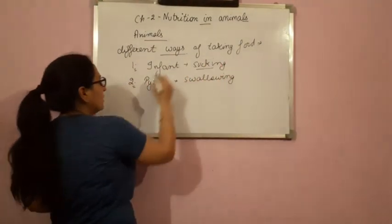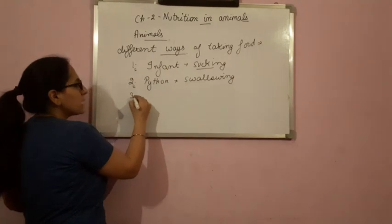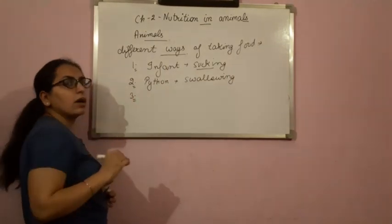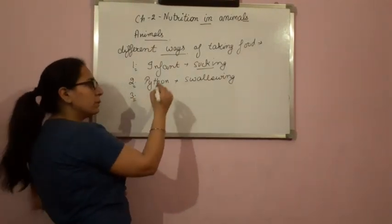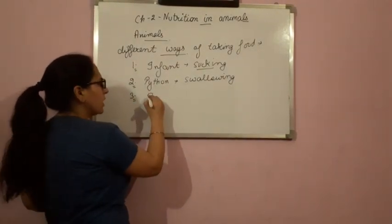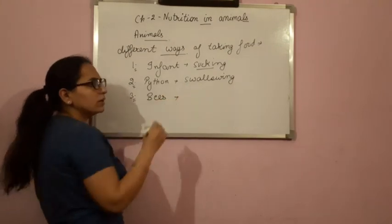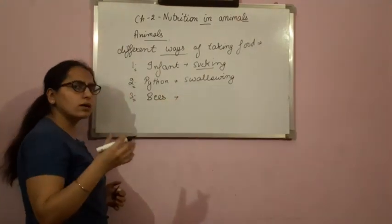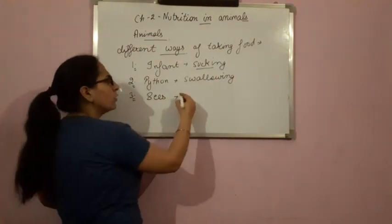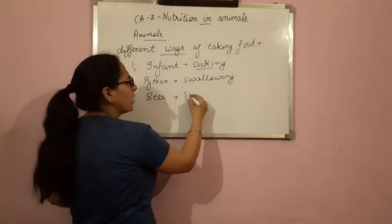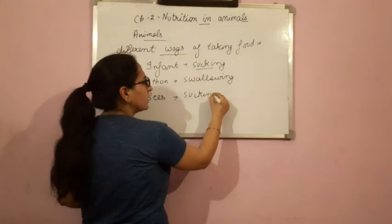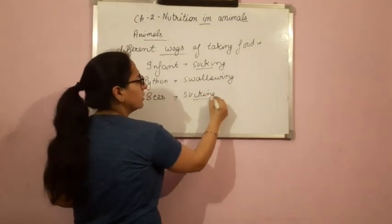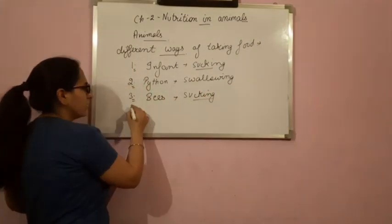Next example: hummingbird or bees. You are aware about bees — they used to suck the nectar of flowers. So again they are using a sucking type of behavior.